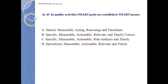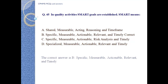Question number 45. In quality activities, SMART goals are established. SMART means: a. shared, measurable, acting, reasoning, and timeframe; b. specific, measurable, actionable, relevant, and timely; c. specific, measurable, actionable, relevant, and timely. The correct answer is B — specific, measurable, actionable, relevant, and timely.